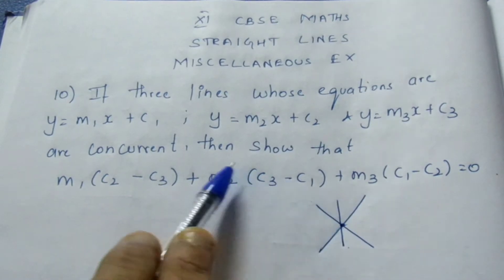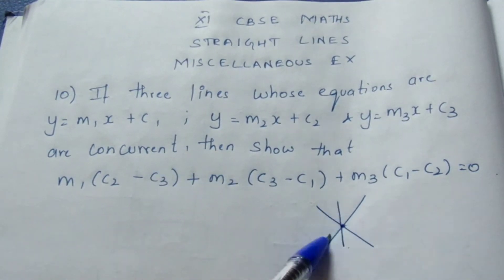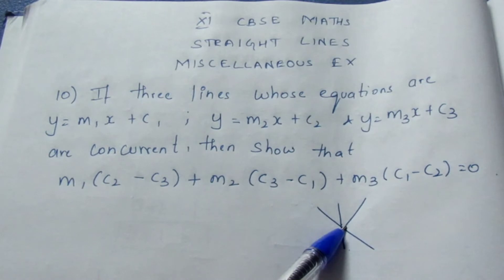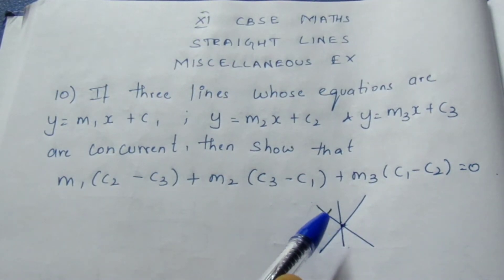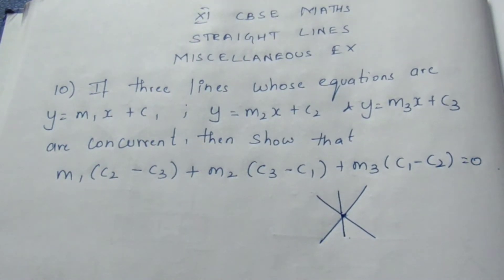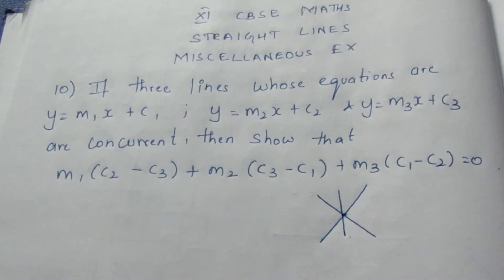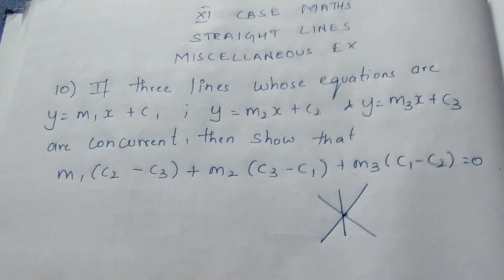Now taking any two equations, if we do elimination, we can find the value of x and y, the point of intersection. I am going to take the first one and the second one, solve it, and find the x and y values. Substitute it in the third equation to prove.